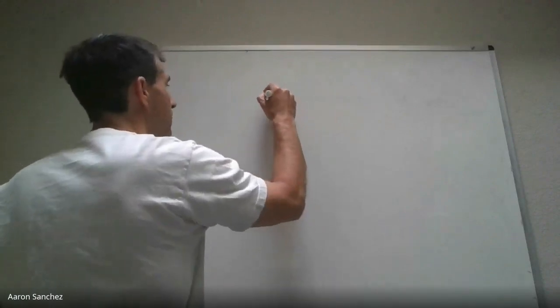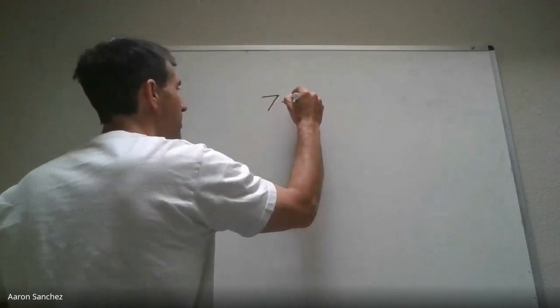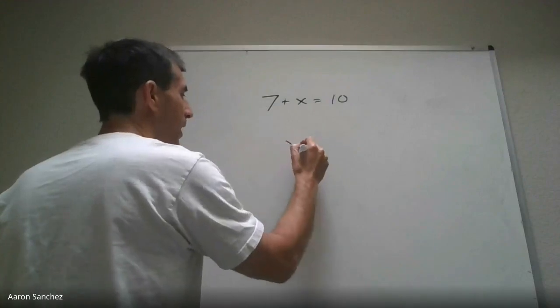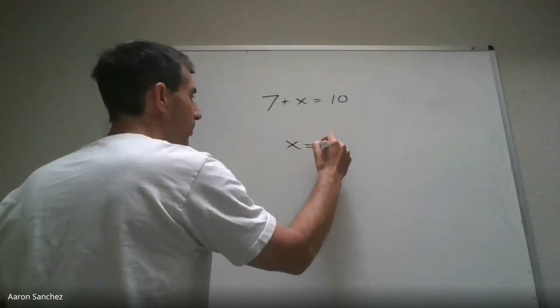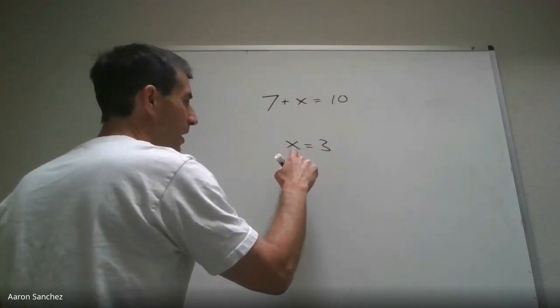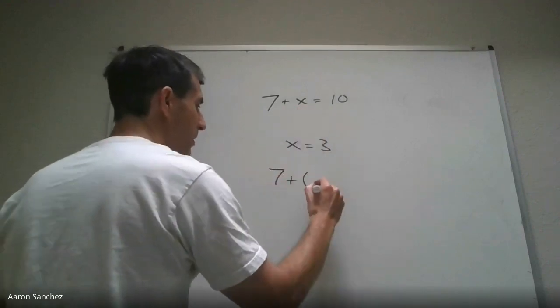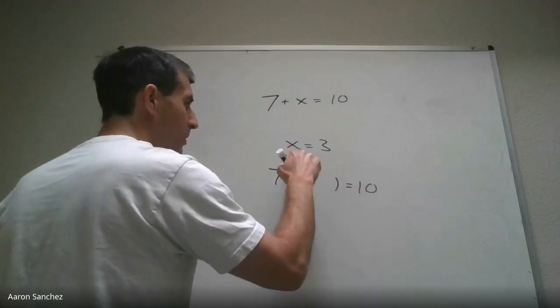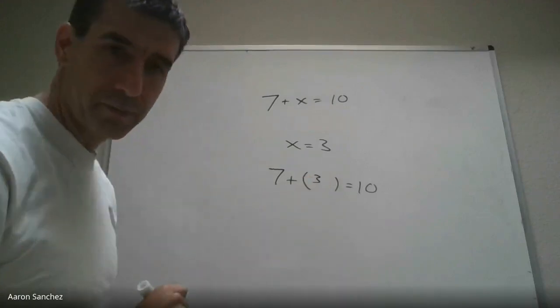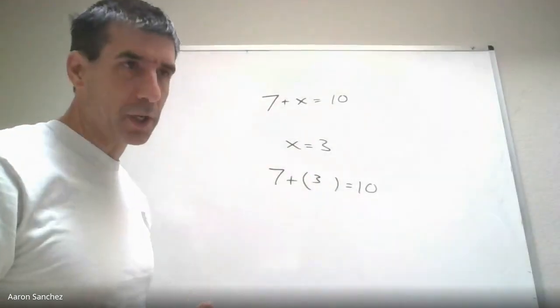We're going to have to find something. If something takes place, we have to show what is equal to what. So if I said seven plus X equals 10, then we can say X equals three. Now this is saying X equals three. So wherever there's an X, I can replace it with three. Instead of seven plus X equals 10, I can substitute it with three. I can use substitution — I can replace it.